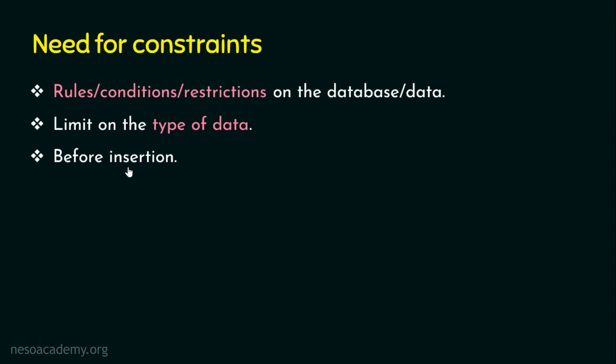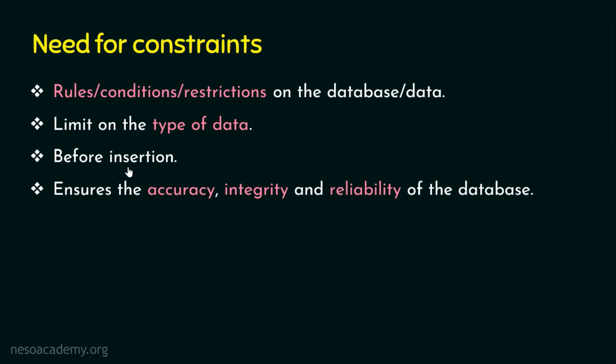When we see an example, you will understand things clearly. Enforcing constraints gives a lot of benefits. The important benefits include the accuracy of the database. It also ensures the integrity and the reliability of the database. When we want to ensure accuracy, integrity, and reliability, then we should go for enforcing some constraints on the database.